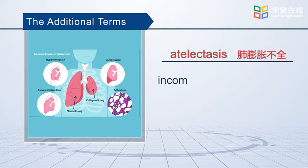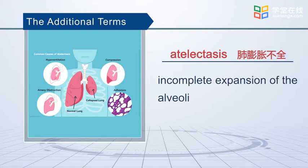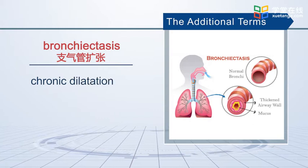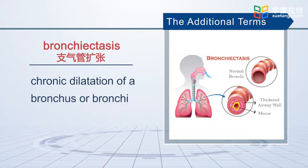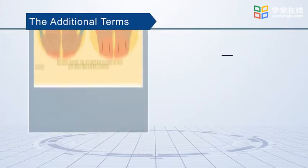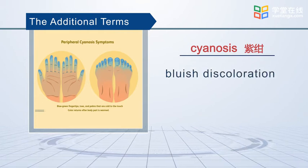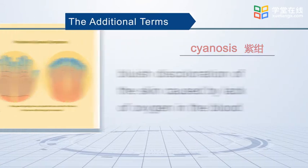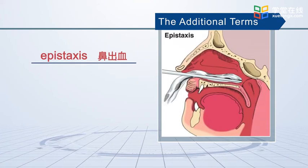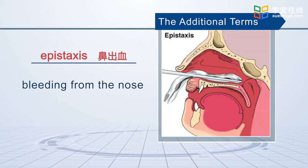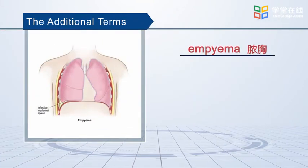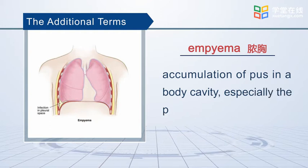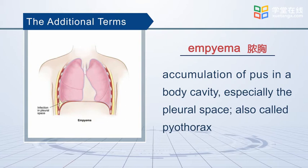Atelectasis is incomplete expansion of the alveoli. Bronchiectasis is chronic dilatation of the bronchus or bronchi. Cyanosis is a bluish discoloration of the skin caused by a lack of oxygen in the blood. Epistaxis is bleeding from the nose. Empyema is accumulation of pus in a body cavity, especially the pleural space, also called pyothorax.